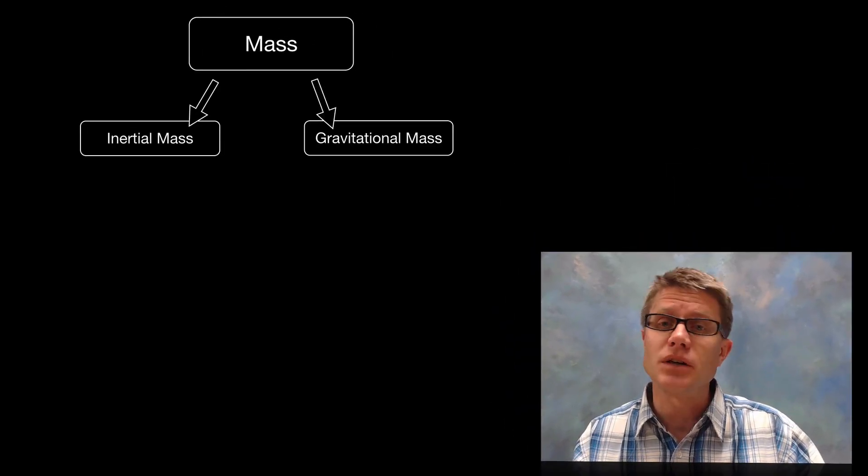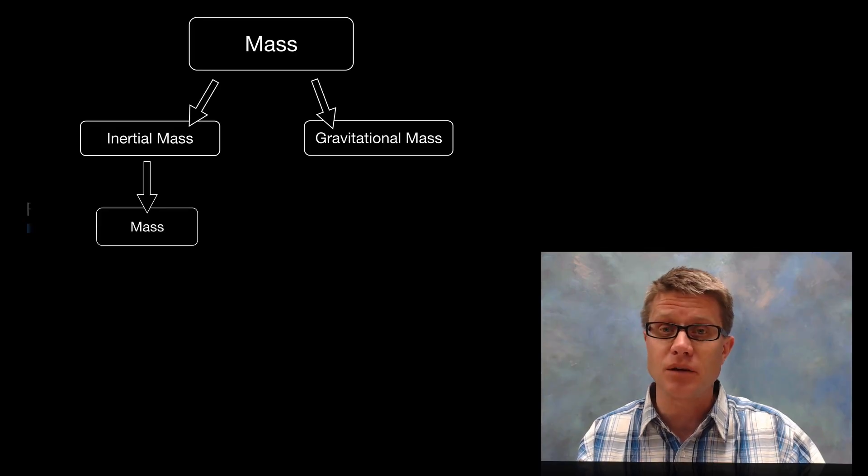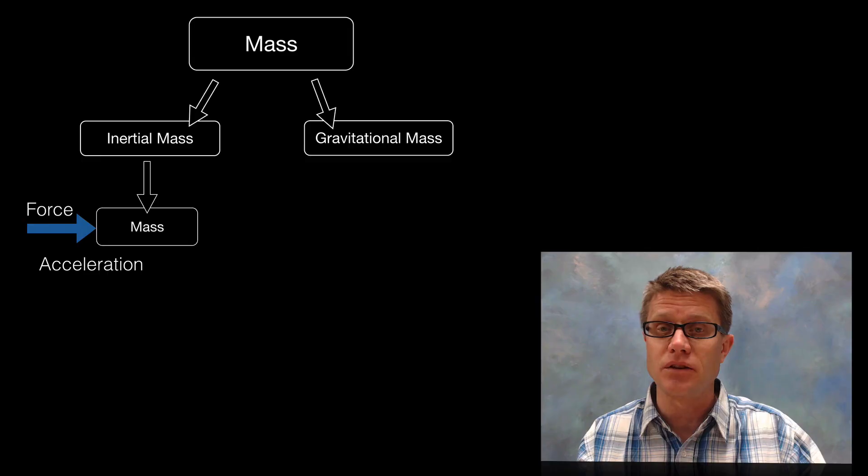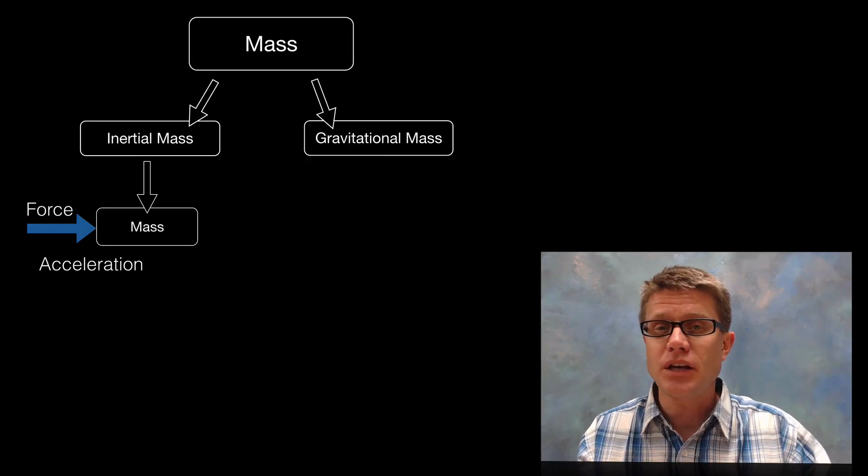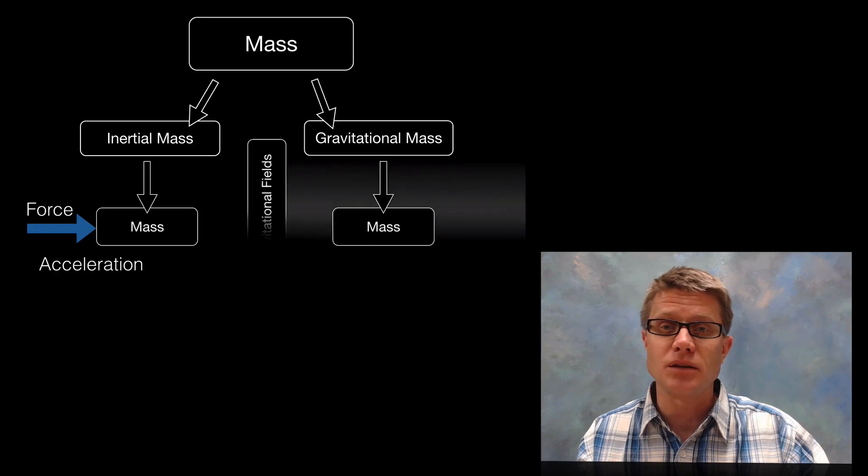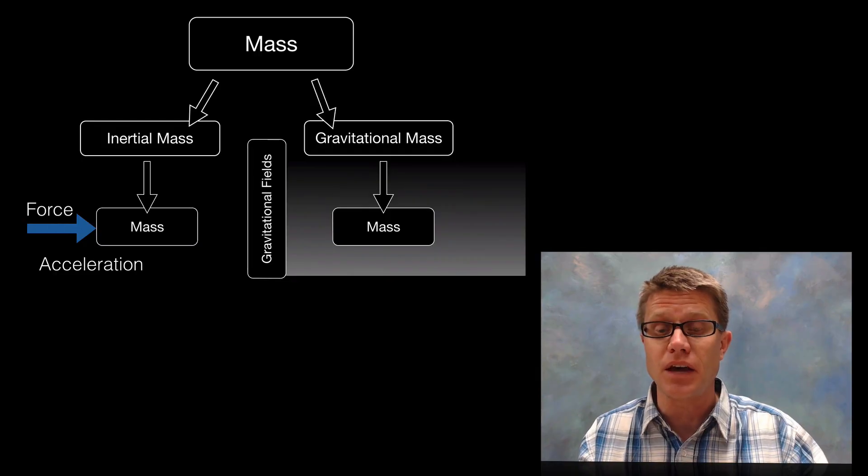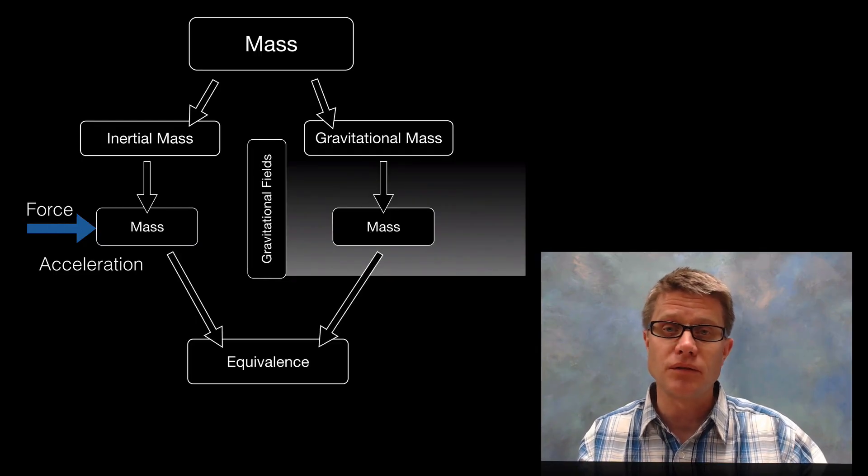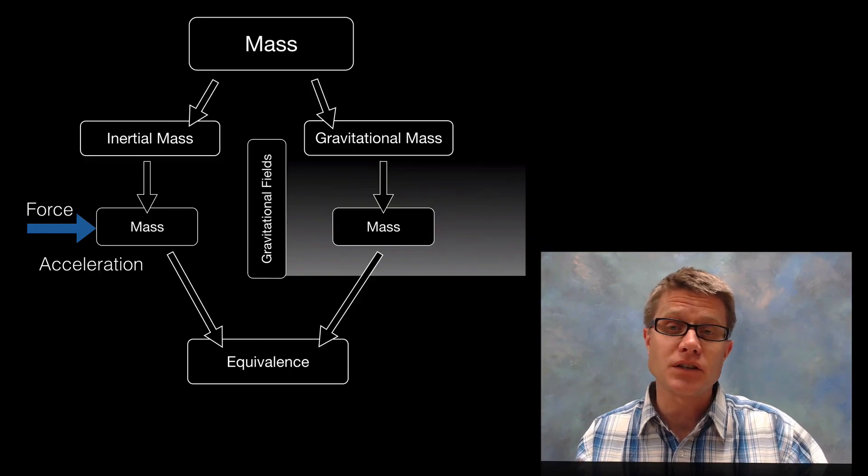Mass can be inertial mass or gravitational mass. Inertial mass is taking a mass, applying a force to it and measuring the acceleration to work back and find the inertial mass that is based on the inertia of an object. Gravitational mass, however, we're taking a mass and putting it inside a gravitational field and measuring the force of gravity on that mass. Scientists have found that these are equivalent. If you do it in those two different ways you're going to get the same number, and that eventually led to the general theory of relativity.